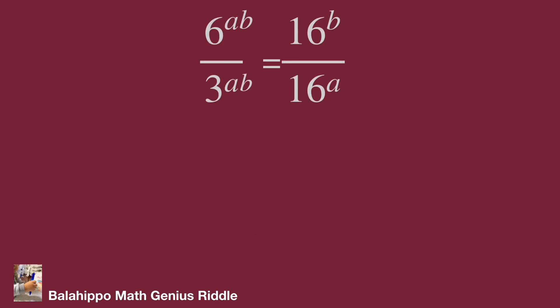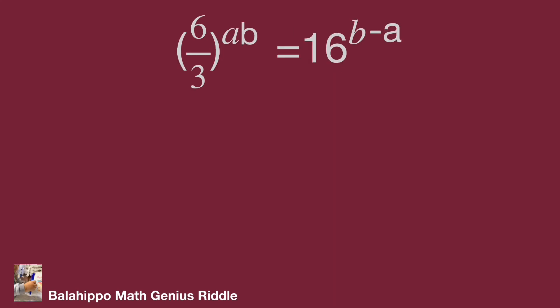It becomes 6 power of ab over 3 power of ab equal to 16 power of b over 16 power of a. Use math operations. Become quantity 6 over 3 power of ab equal to 16 power of b minus a. That's good. We get ab and a minus b in the new equation.